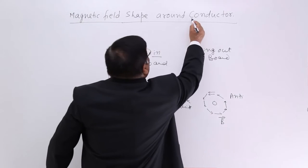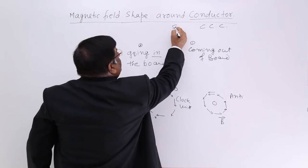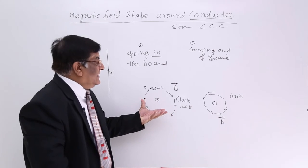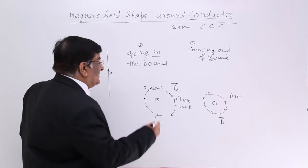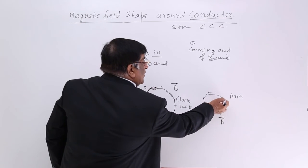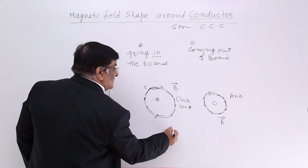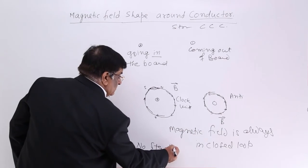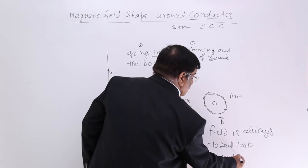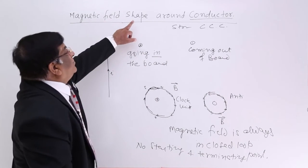This is the rule for a straight current-carrying conductor. Now, from where does the magnetic field start and where does it end? We don't see any starting point because it is a closed loop. This is a very important property of magnetic field — that magnetic field lines form a closed loop, with no starting and no terminating point. This is the shape of the field around a conductor.